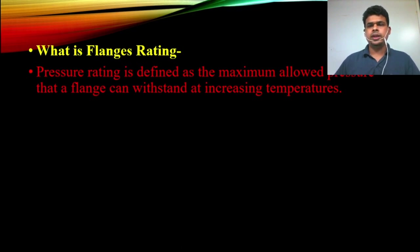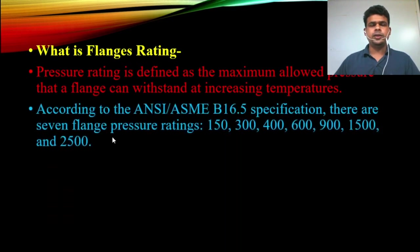Let's see how we can select the flange rating. According to ASME B16.5 specification, there are 7 flange ratings available: 150, 300, 400, 600, 900, 1500, and 2500.